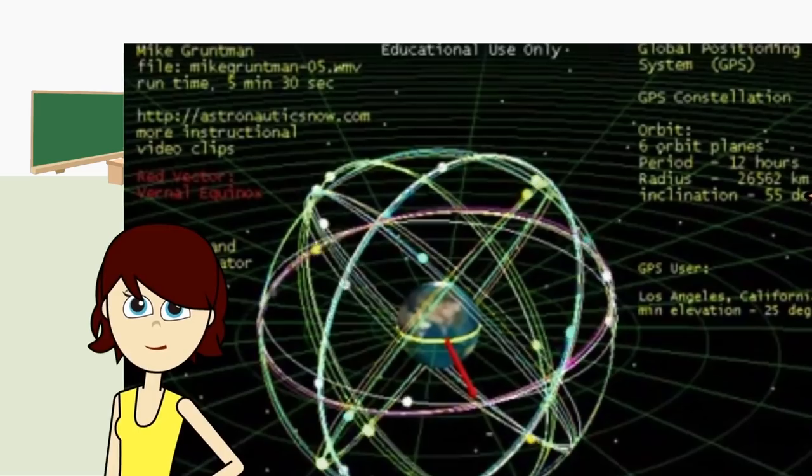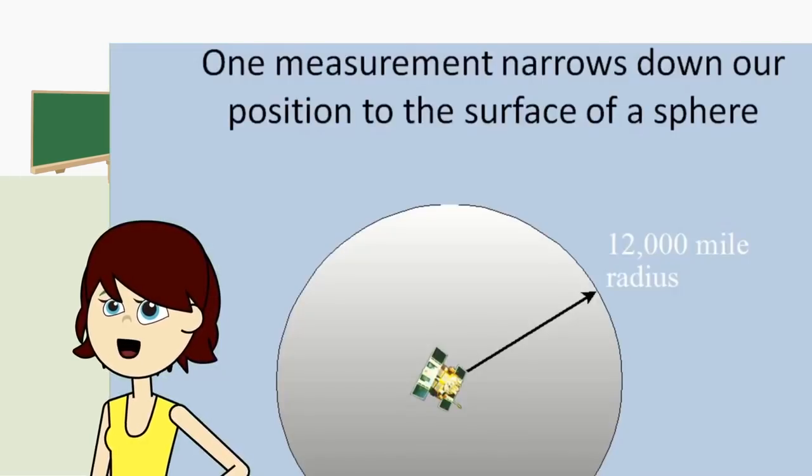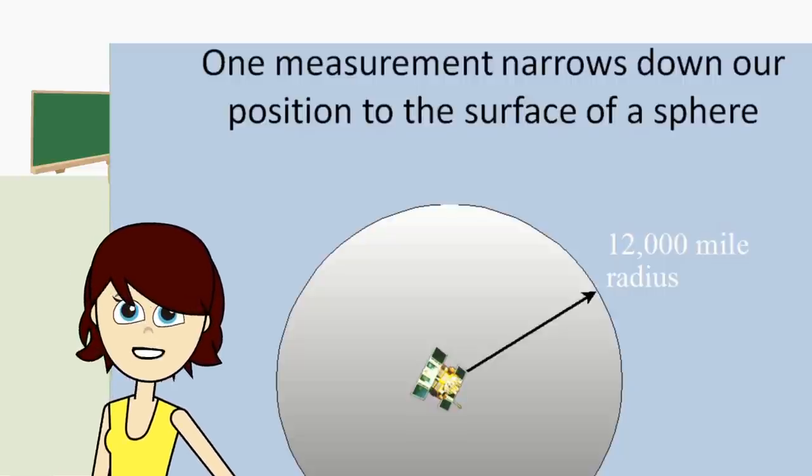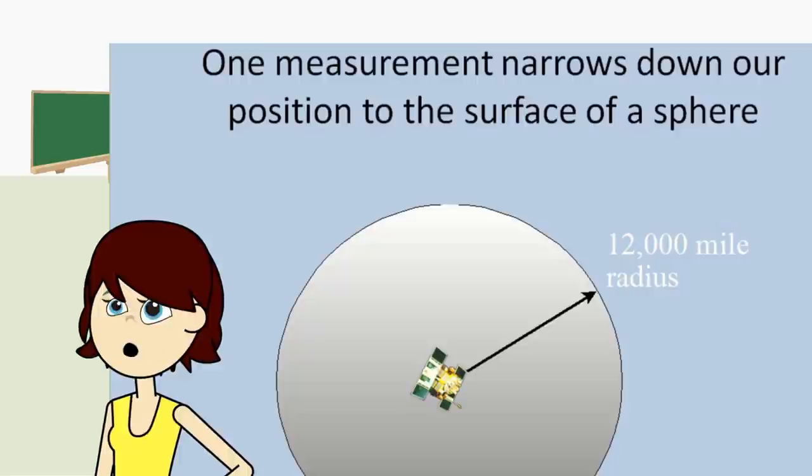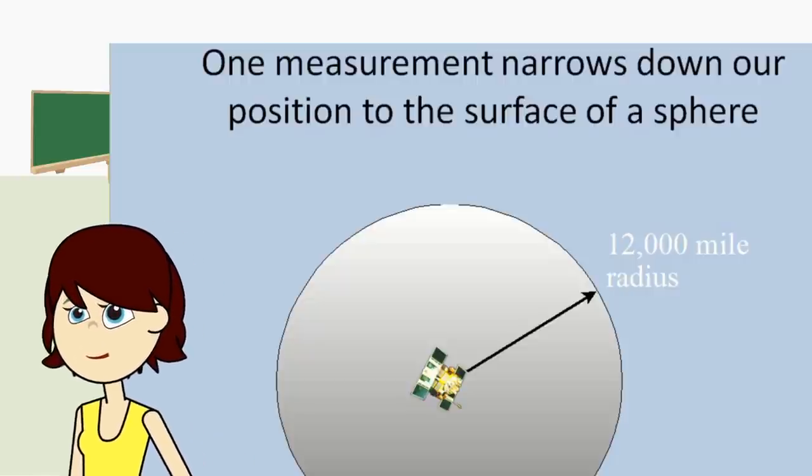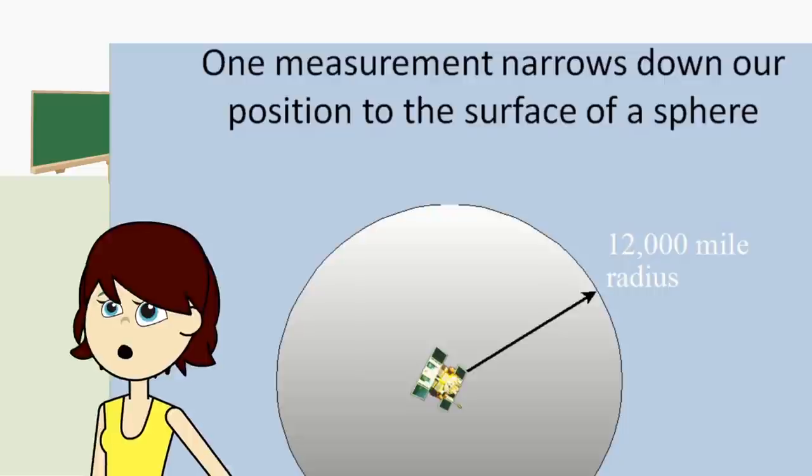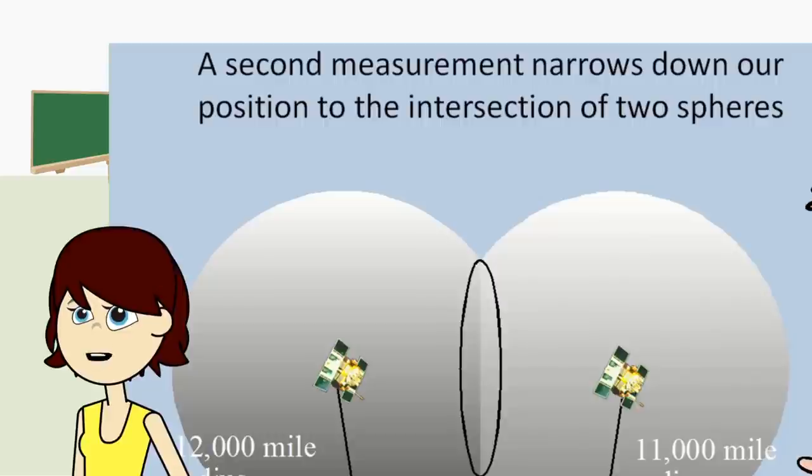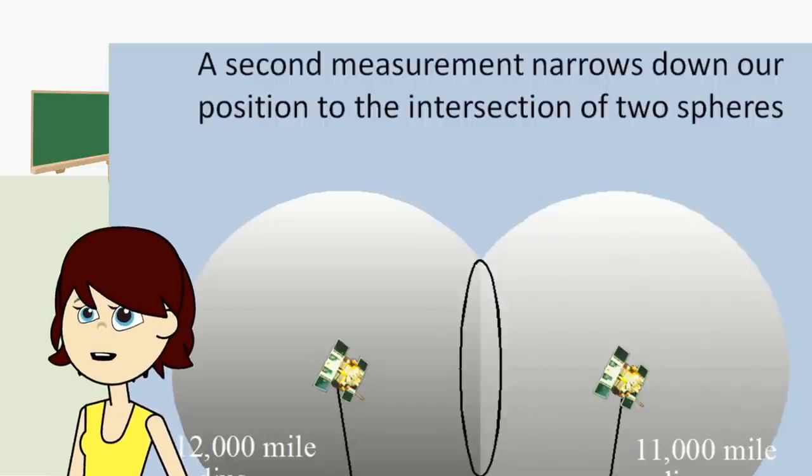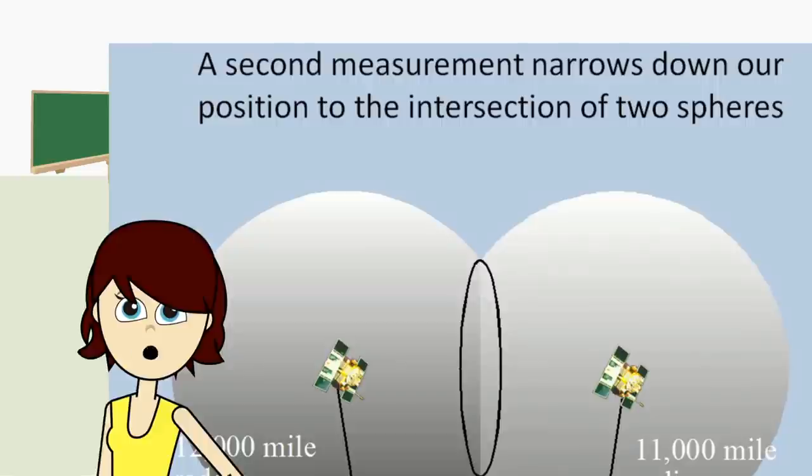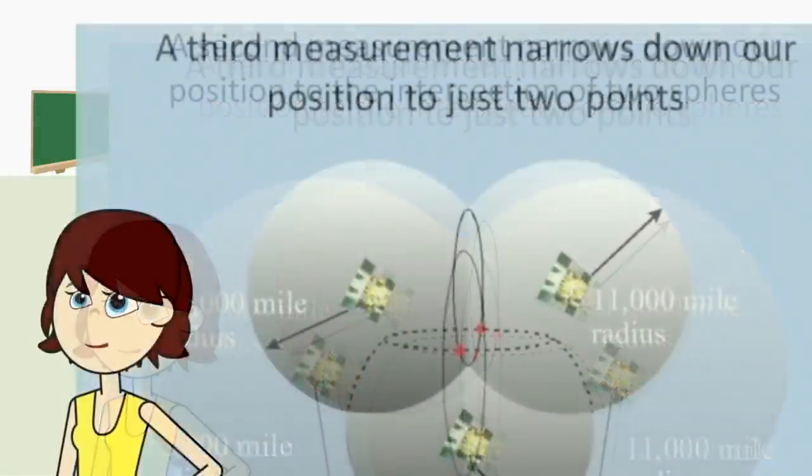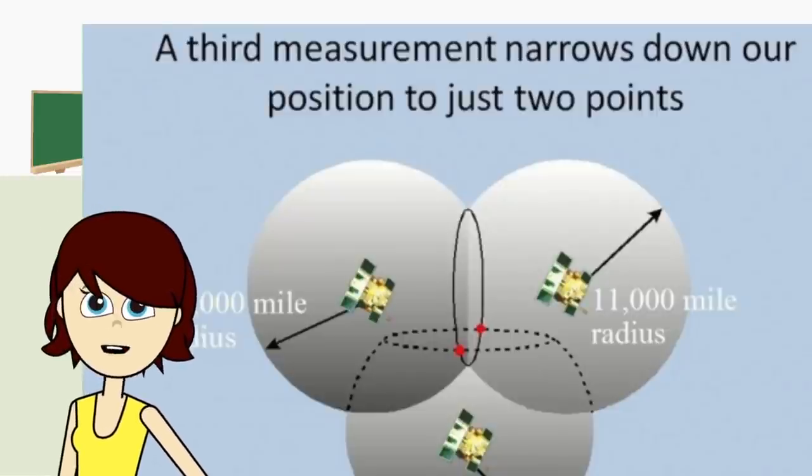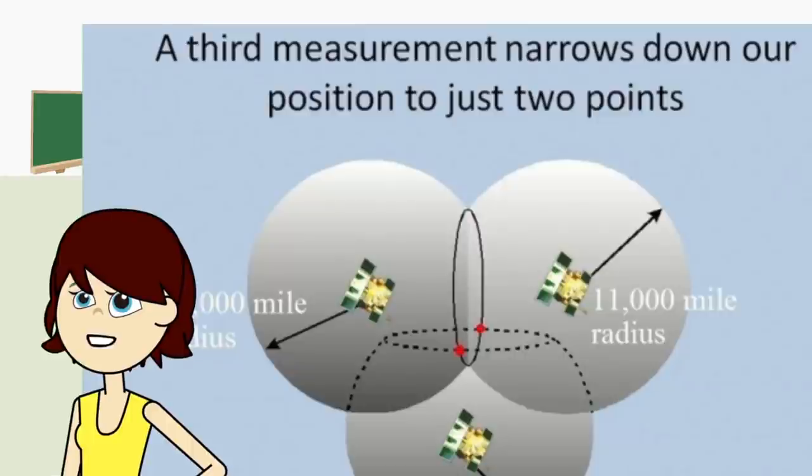Now let's talk about trilateration. That's when you have the satellite measuring its distance to whatever is receiving the signal. That means for one satellite you're somewhere on a giant ball. When you take two satellites, you have two balls intersecting, which means you're somewhere on a circle.